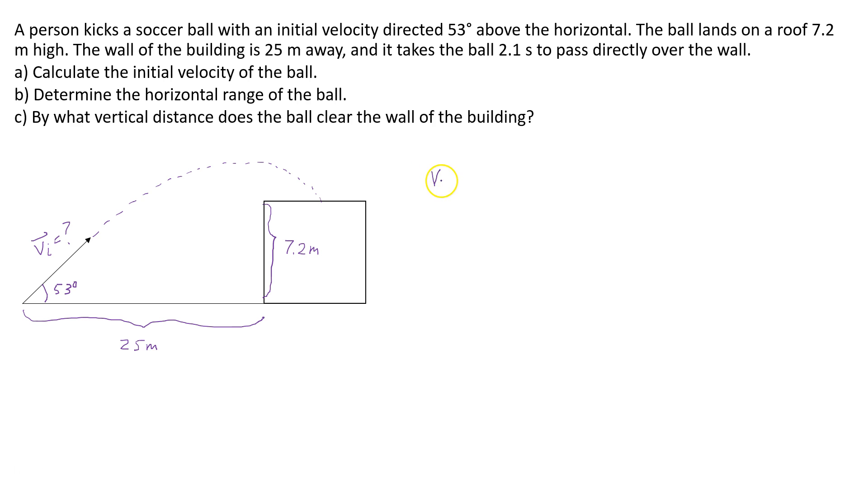So starting with the vertical, what do we know? We know the time. The change in time, delta T, is 2.1 seconds.